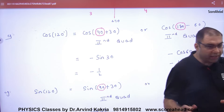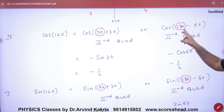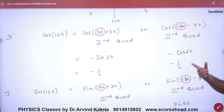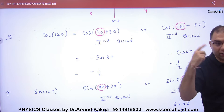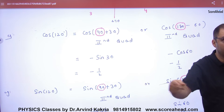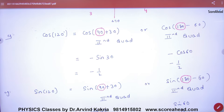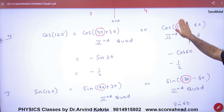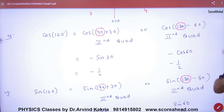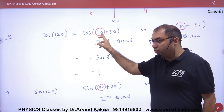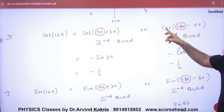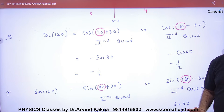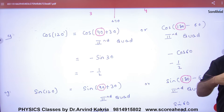That is the first method. In the second method using 180 minus 60: if the first standard angle is 180 or 360, there is no conversion of the function. Cos remains cos, and the 180 is removed, leaving cos 60. Following the negative sign from the second quadrant, the answer is still minus half.